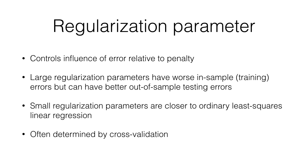We can try a range of possible parameters and see which one predicts out-of-sample the best. Generally, we find a U-shaped curve in out-of-sample testing error versus regularization magnitude. On one end, when we're not regularizing or penalizing enough, we have overfitting. And on the other end, when we're over-penalizing, we have underfitting — the model isn't complex enough to capture whatever signal there is between the features and the outcome.